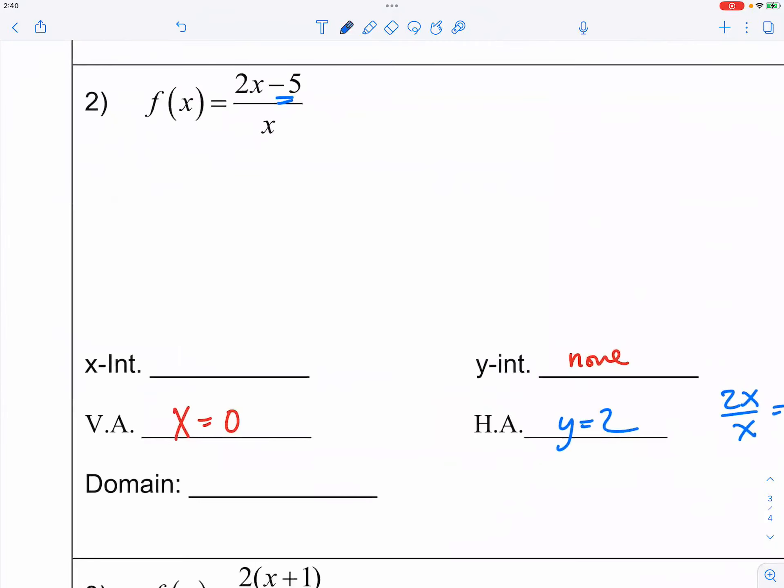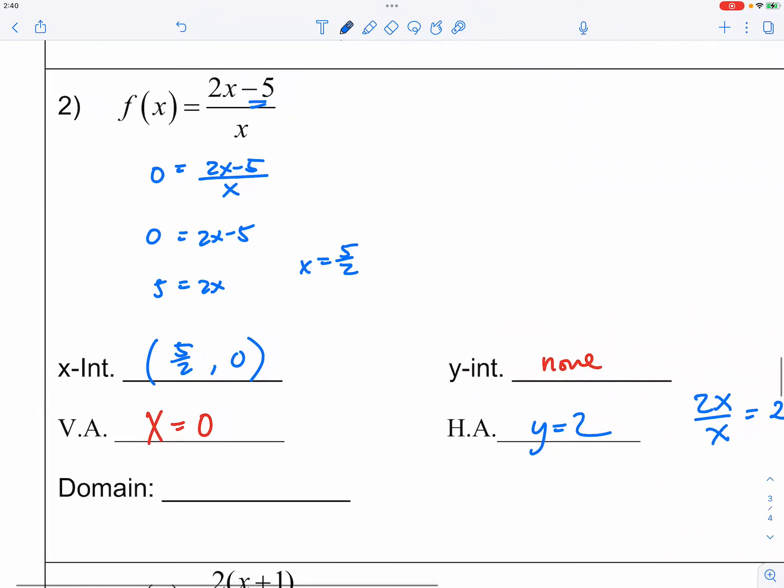And now, what about the x-intercept? Again, you set the entire fraction to zero, and then for a fraction to be zero, the numerator becomes zero. So you solve for x, so x equals five over two. So five over two comma zero, or 2.5 comma zero, would be your x-intercept.